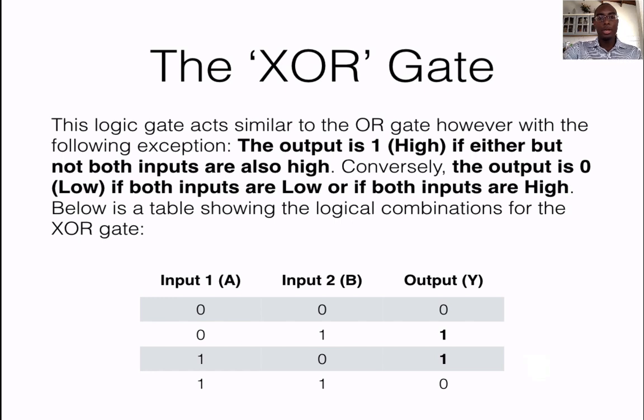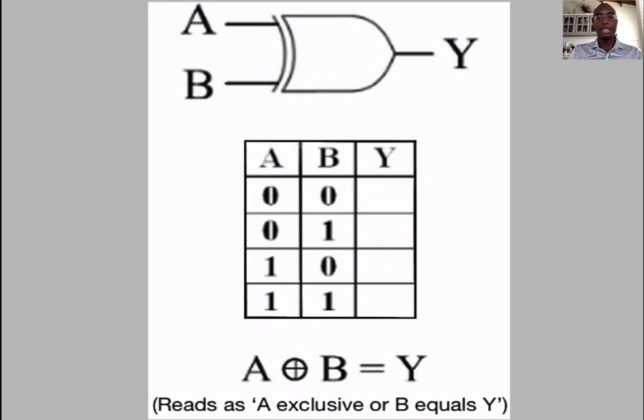The next gate on our list is the XOR gate. The X represents exclusive OR. So this is a type of OR gate with a particular criteria. The output is 1 or high if either but not both inputs are also high. Conversely, the output is 0 if both inputs are low or if both inputs are high.